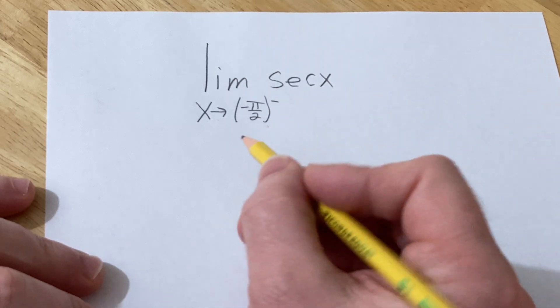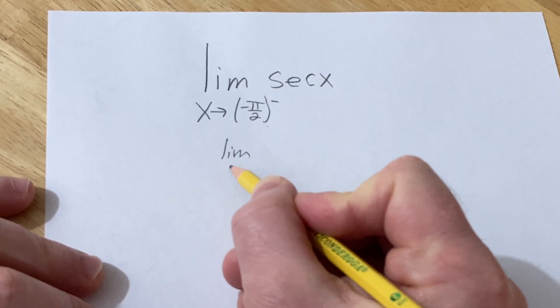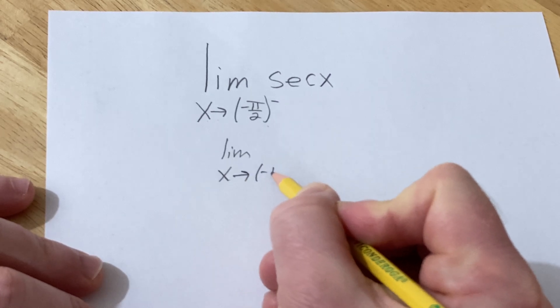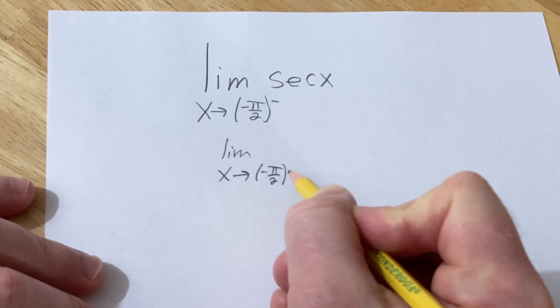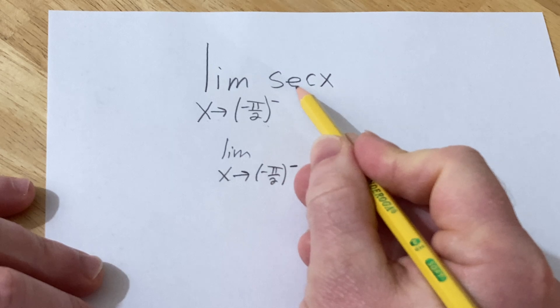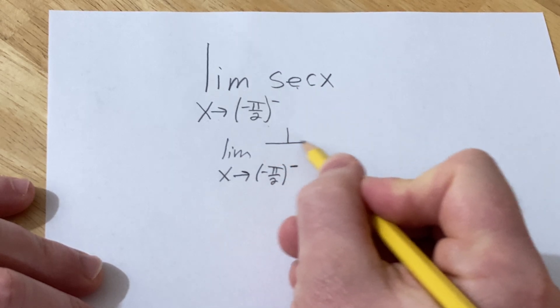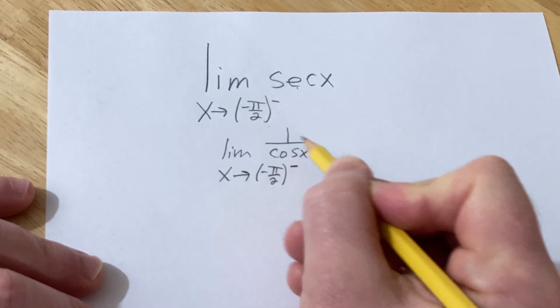We can start by rewriting this as the limit as x approaches negative pi over 2 from the left. Secant is 1 over cosine, so this is 1 over cosine of x.